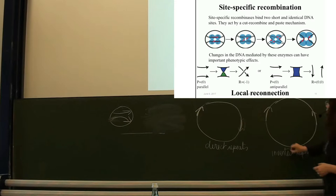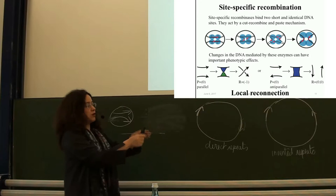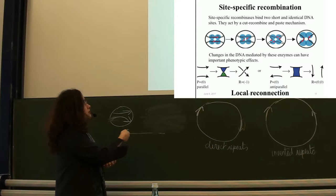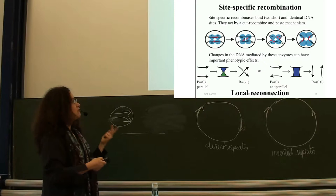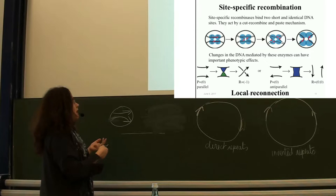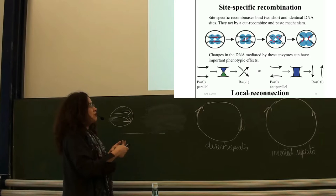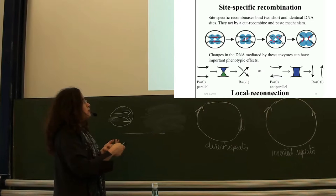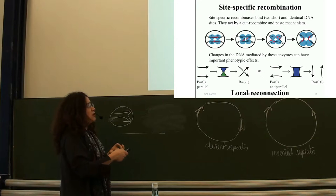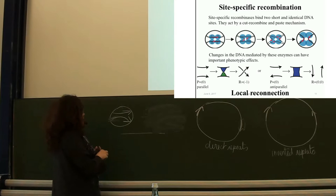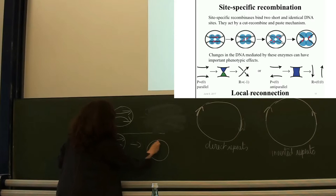If the second word is in the opposite orientation, that's called inverted repeats. When the two sites come together for the recombination reaction, in the diagram they can appear in parallel or anti-parallel orientation. Because we understand the biochemistry of these enzymes, in the parallel case you expect a plus or minus crossing to appear in the domain — you go from a zero-tangle to a plus or minus one-tangle. If the arrows are pointing in the opposite direction, you go from the zero-tangle to the infinity-tangle.